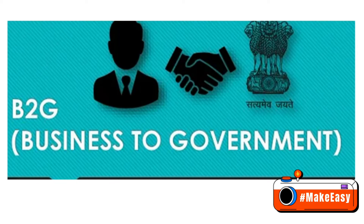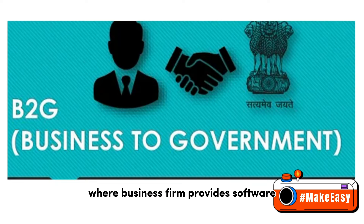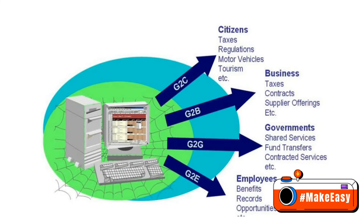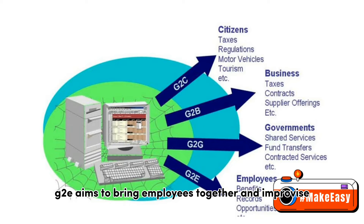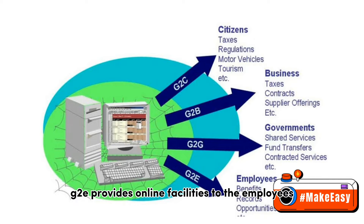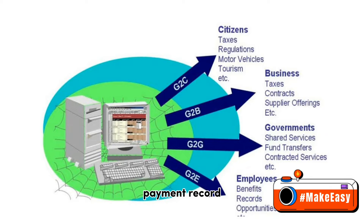Number 4: Business to Government (B2G). This refers to the interaction between business firms and the government, where business firms provide software or other types of services to government institutions. Number 5: Government to Employee (G2E). G2E aims to bring employees together and improve knowledge sharing. It provides online facilities to employees — such as applying for leave, reviewing salary payment records, and checking holiday balance.